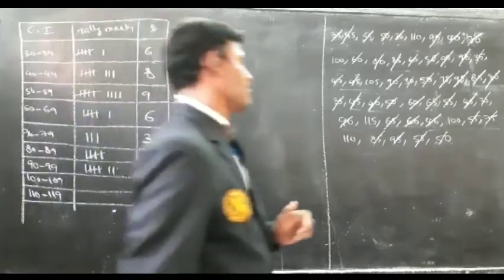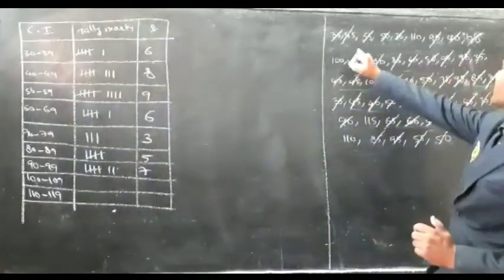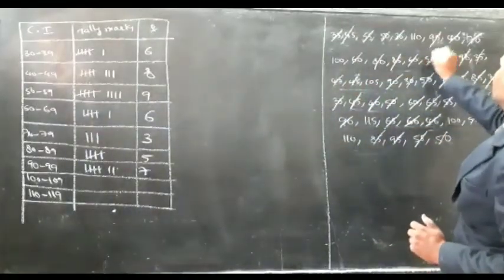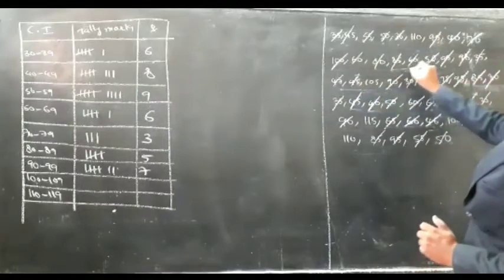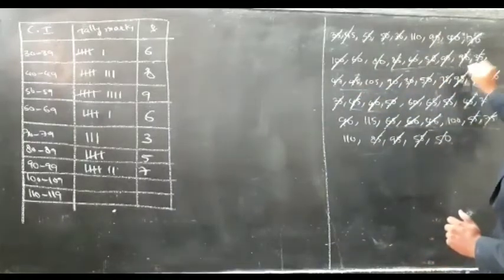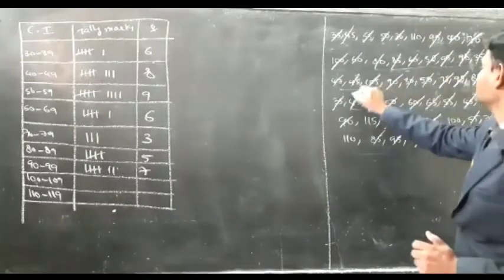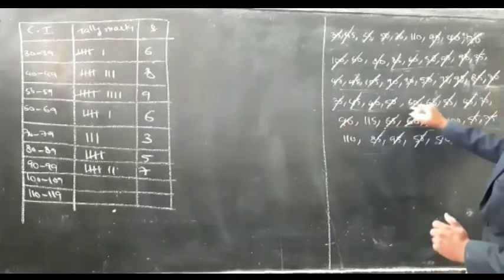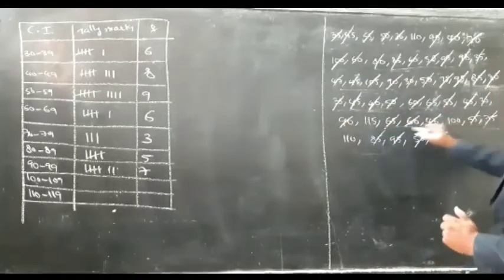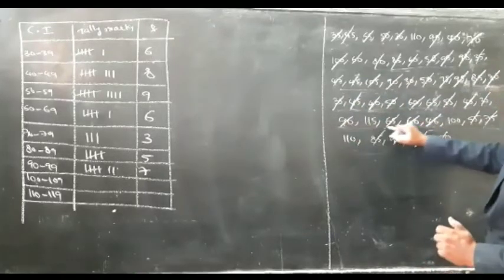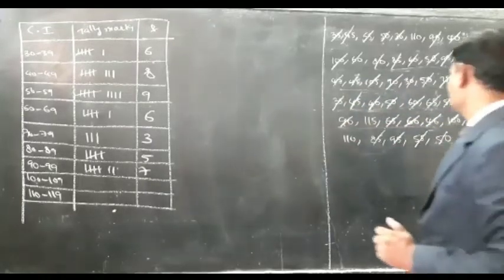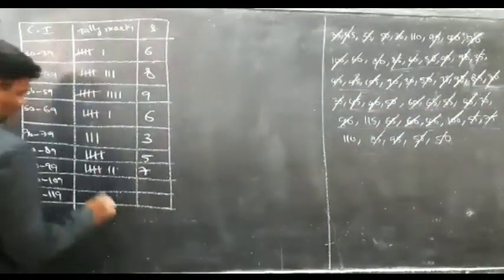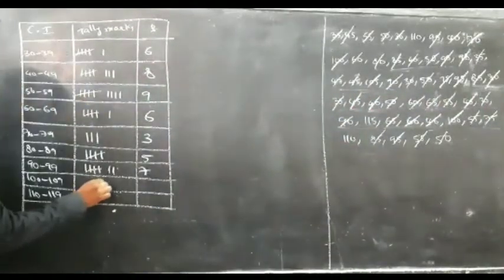For the class 100 to 109, there are only 3 values: 1, 2, and 3.